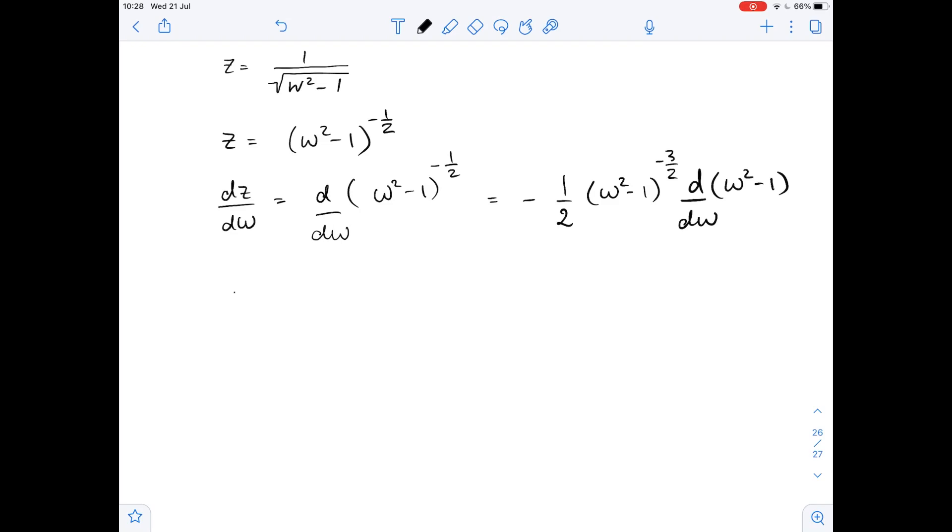Let's simplify it. This equals negative 1 over 2 times w squared minus 1 to the power of negative 3 over 2 times 2w. Then this equals negative w over w squared minus 1 to the power of 3 over 2.